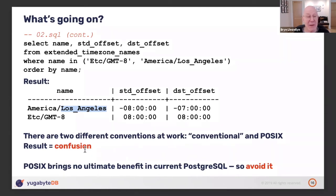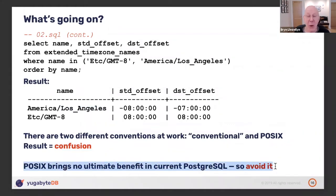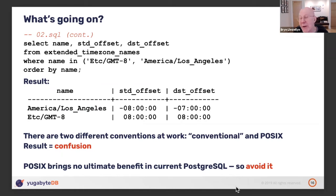The moral of the story is that these days, POSIX malarkey brings no ultimate benefit because you can get full functionality in other ways. So don't go near it with a barge pole. To avoid going near it accidentally, you have to adopt some conventions, and it's always better to enforce these conventions with user-defined functions.